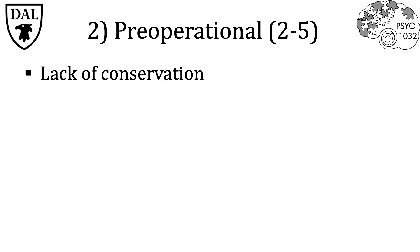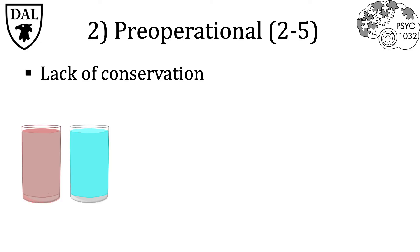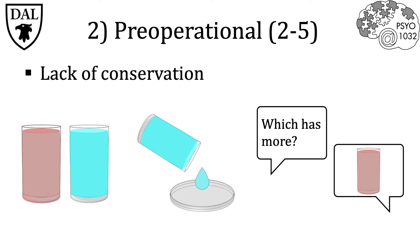Finally, the fourth quality is a lack of conservation — the absence of the ability to recognize that some properties of an object can change while others remain constant. For example, children in this stage lack conservation of liquid. If they see two equal glasses with the same amount of liquid, they will recognize the amounts are the same. However, if you then pour the water from one glass into a petri dish, they will say the glass has more water because it's bigger, even though the amount of water never changed.